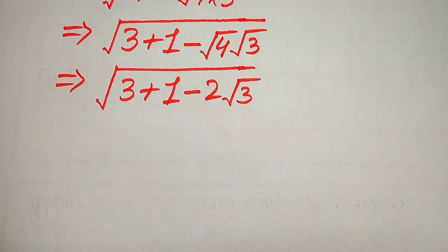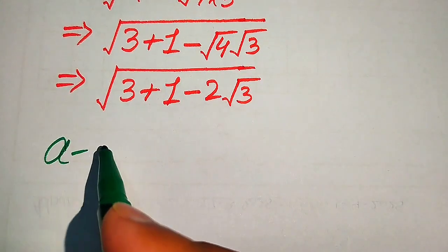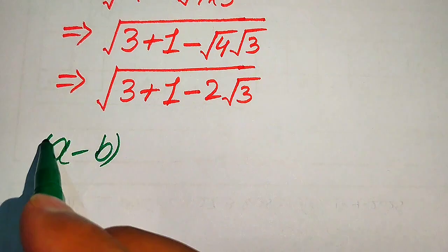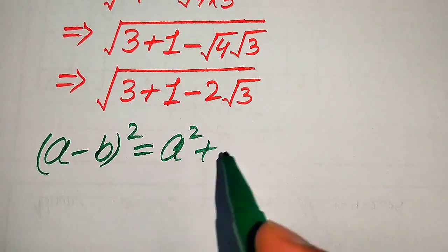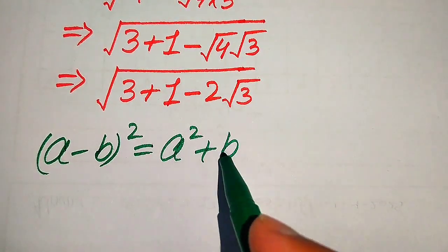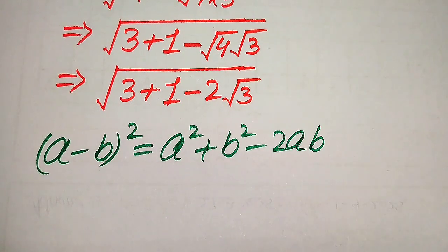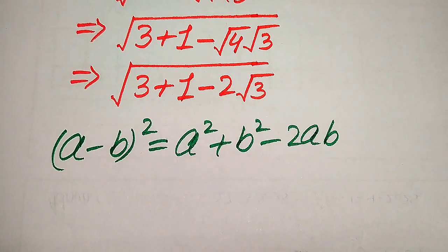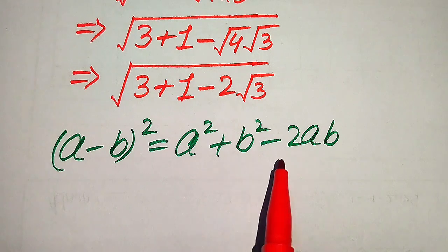In the next step we solve this using the algebraic formula: (a minus b) whole square equals a squared plus b squared minus 2ab. We need to use this formula, so we rewrite the expression to match this form.